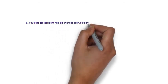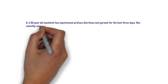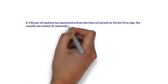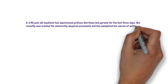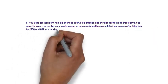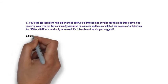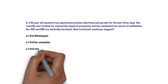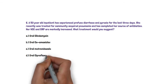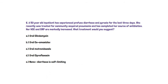We're on question 6 — we're halfway there. A 53-year-old inpatient has experienced profuse diarrhoea and pyrexia for the last three days. This lady was recently treated for community-acquired pneumonia and has completed her course of antibiotics. Her white cells and CRP are markedly increased. What treatment would you commence? Options: A. Oral clindamycin, B. Oral co-amoxiclav, C. Oral metronidazole, D. Oral ciprofloxacin, or E. None, as diarrhoea in this condition is self-limiting.